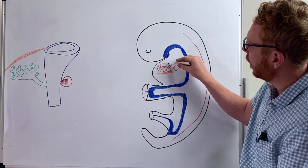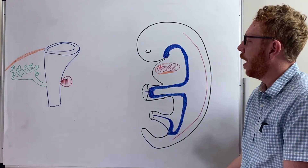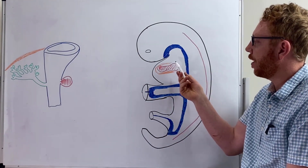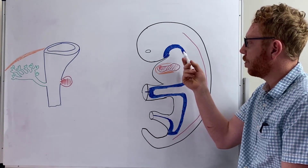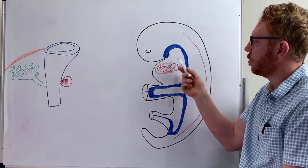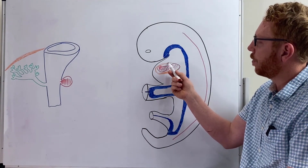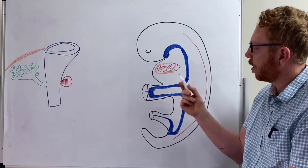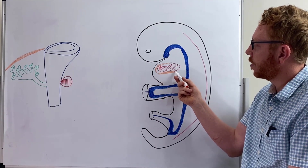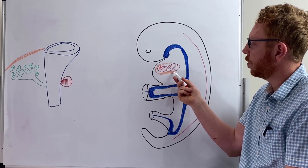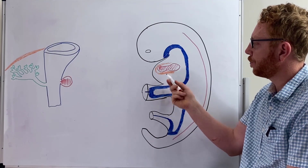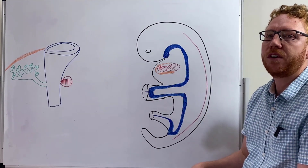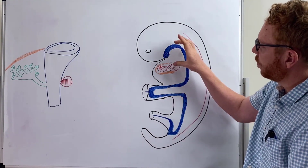As it loops around the heart, it will supply a covering to the heart, which is going to be the fibrous pericardium. Part of the reason for this is that this structure comes from the cervical region and drags what we call the phrenic nerve with it — which is why that part of the pericardium is innervated by the phrenic nerve. This structure will lie just under the heart and is an important demarcation point between the abdomen and the thorax.